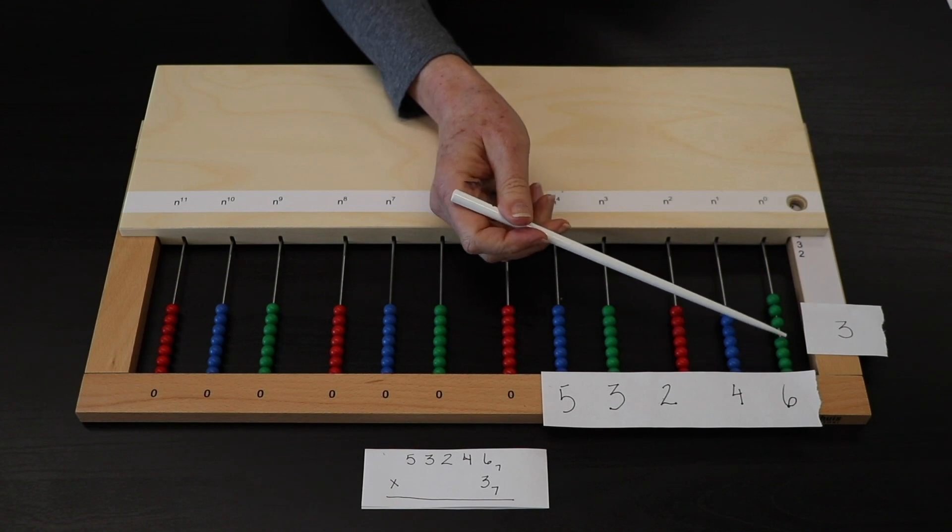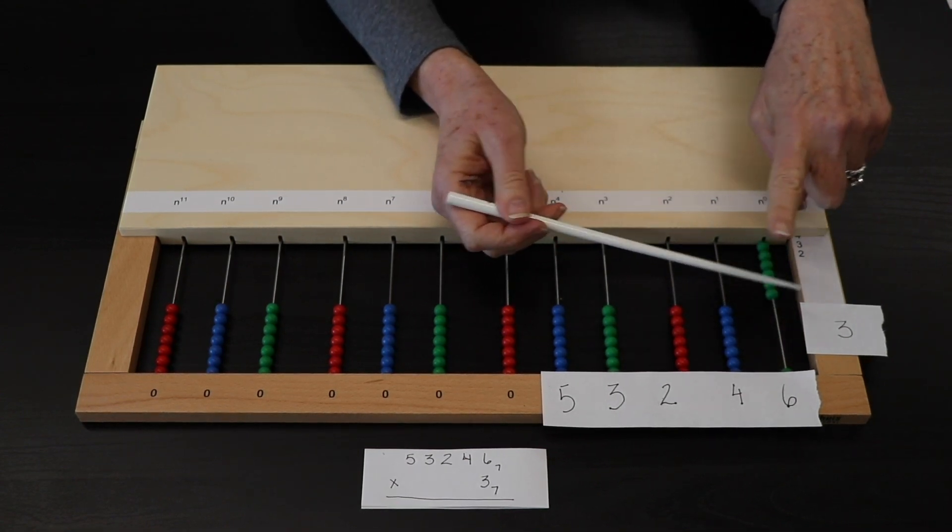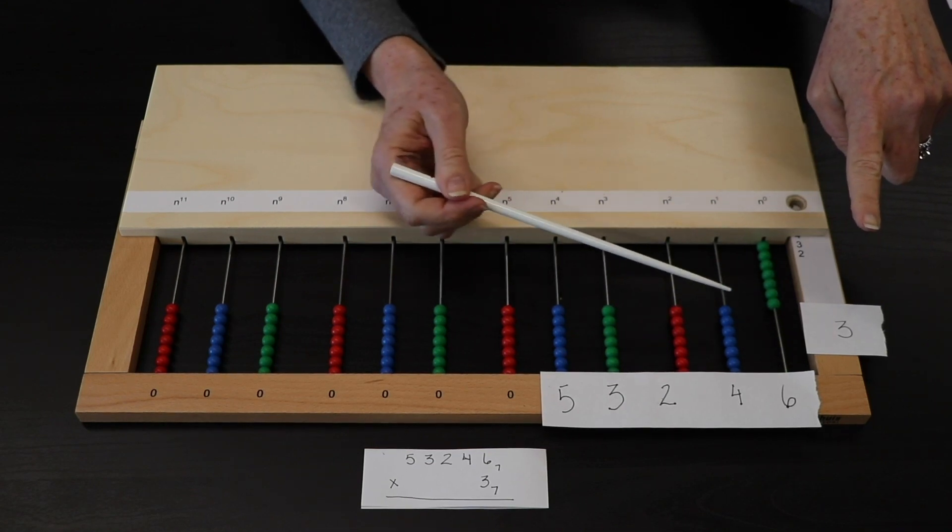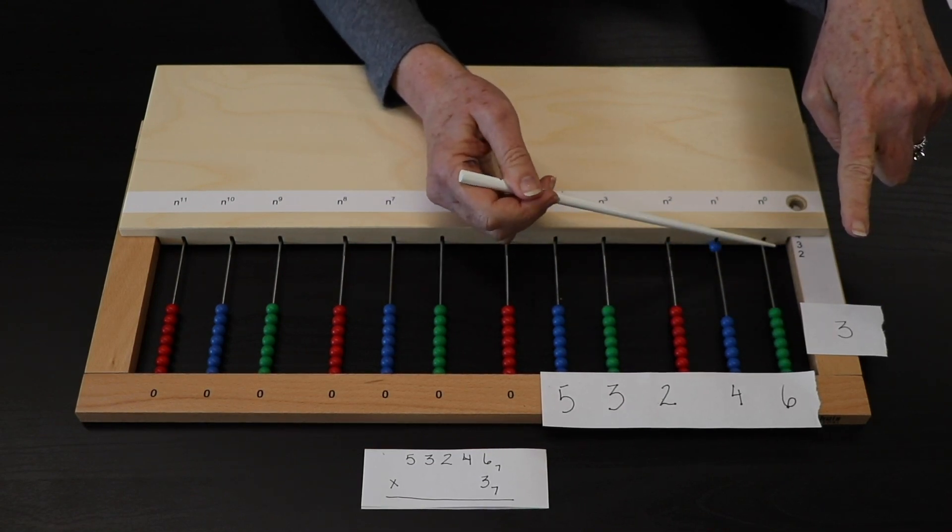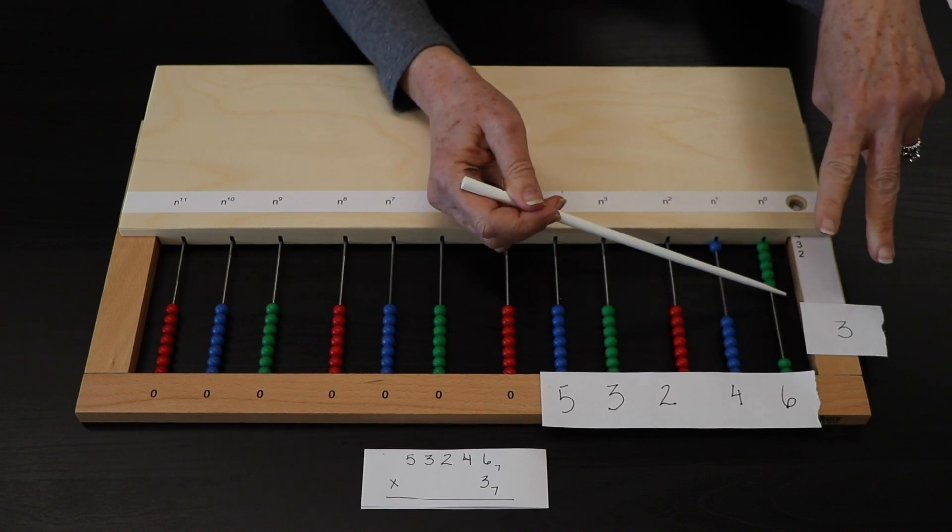This can be done 2 ways. Initially, the child can make a set of 6, 3 times. 1, 2, 3, 4, 5, 6, taken once. 1, 2, exchange, 2, 3, 4, 5, 6, taken twice.